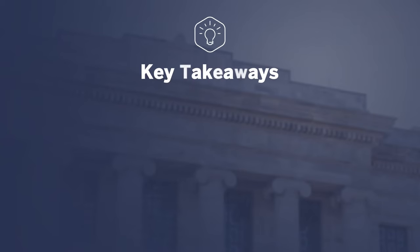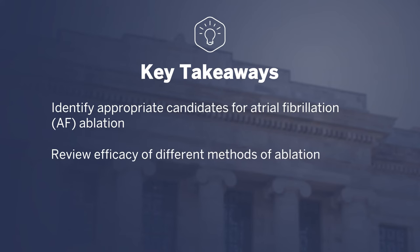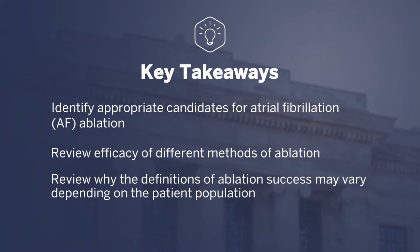My name is William Hucker and I am a cardiac electrophysiologist from the Massachusetts General Hospital in Boston, Massachusetts. I'm here today to talk to you about catheter ablation for atrial fibrillation. The key takeaways from this talk are to identify appropriate candidates for AFib ablation, to review the efficacy of different methods of ablation, and review why the definitions of ablation success may vary depending on the patient population.